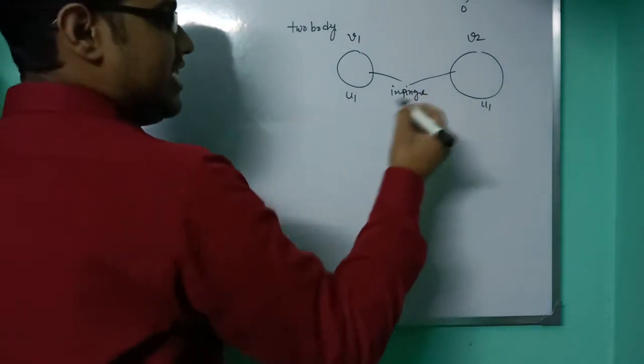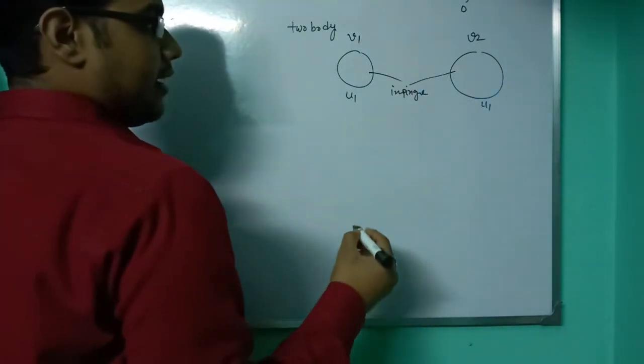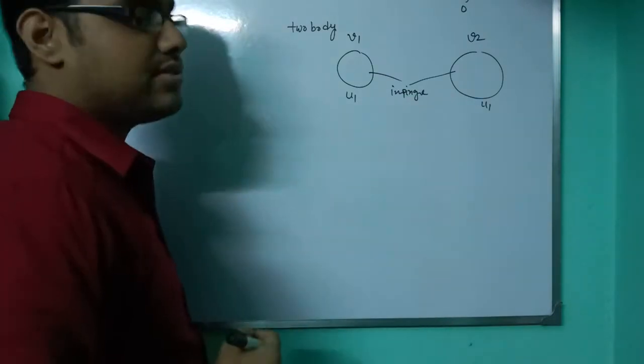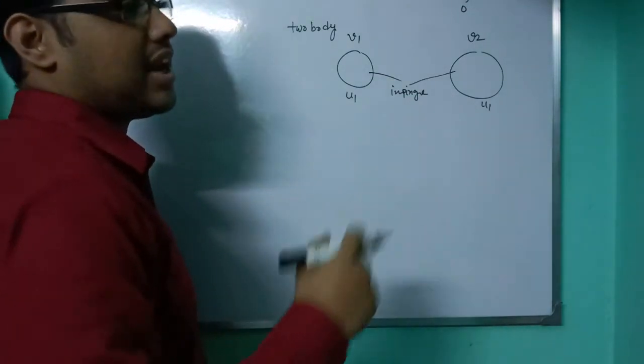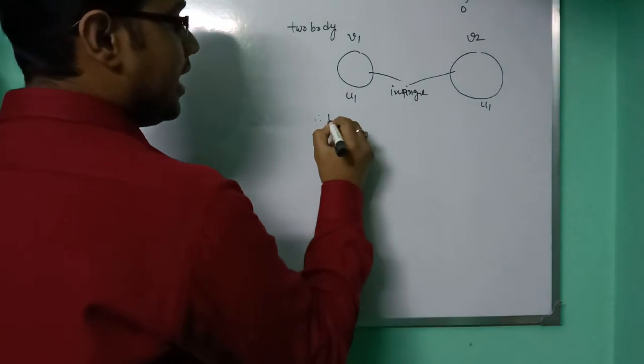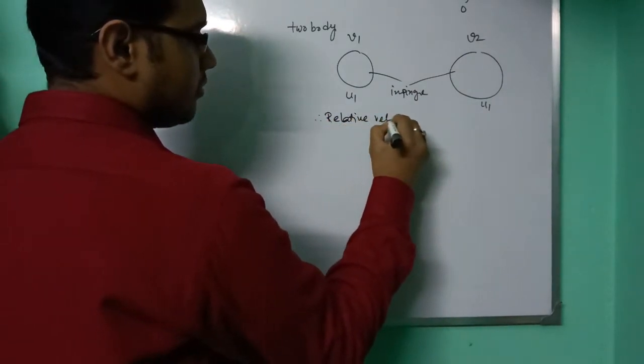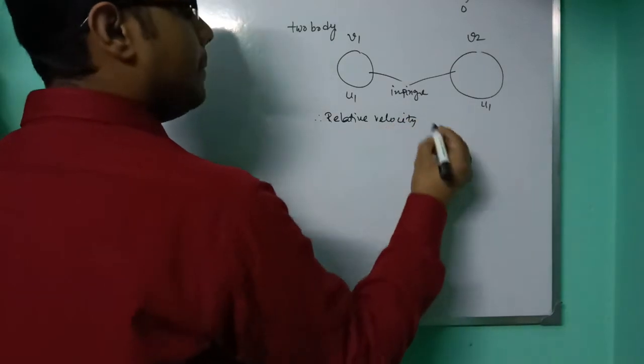When two bodies impinge together, the relative velocity before impact and the relative velocity after impact have a constant ratio.